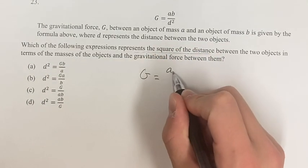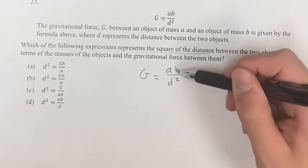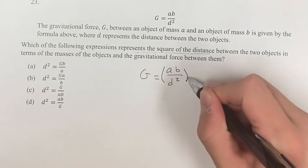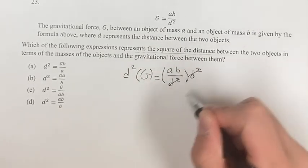So we have our equation, g is equal to ab divided by d squared. So one way to get d squared out of the denominator is to multiply by d squared. Of course that means you have to do it to both sides, and these will cancel.